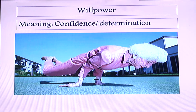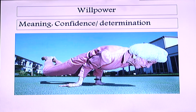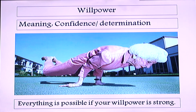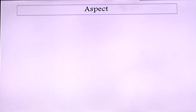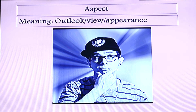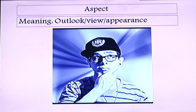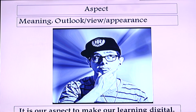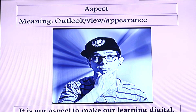Can you make any sentence with the word 'willpower'? Everything is possible if your willpower is strong. Next word: 'aspect.' Look at the picture. 'Aspect' means outlook, view, appearance. For example: 'It is our aspect to make our learning digital.'